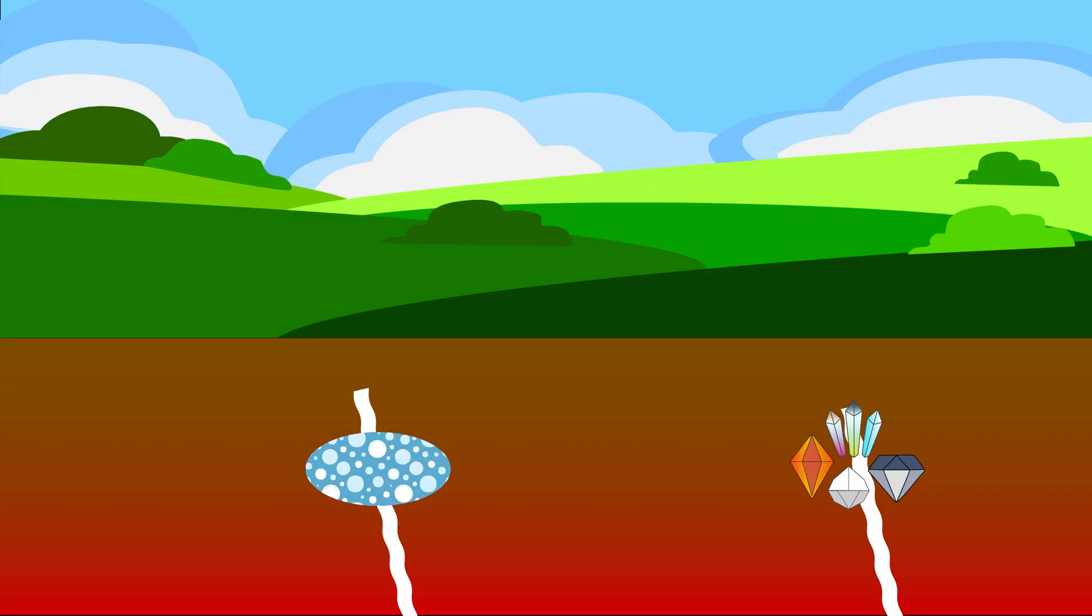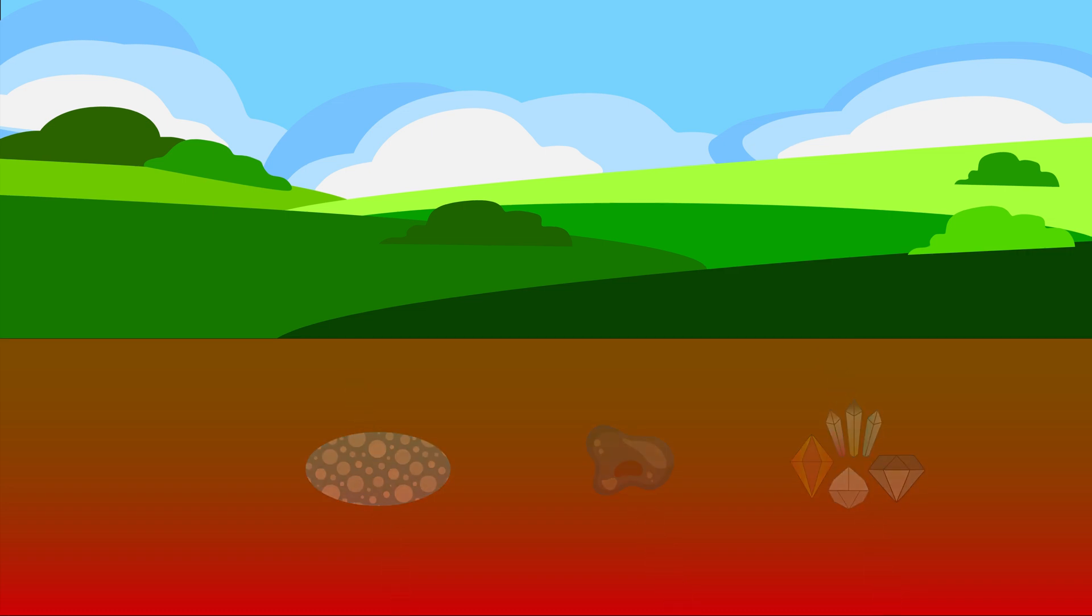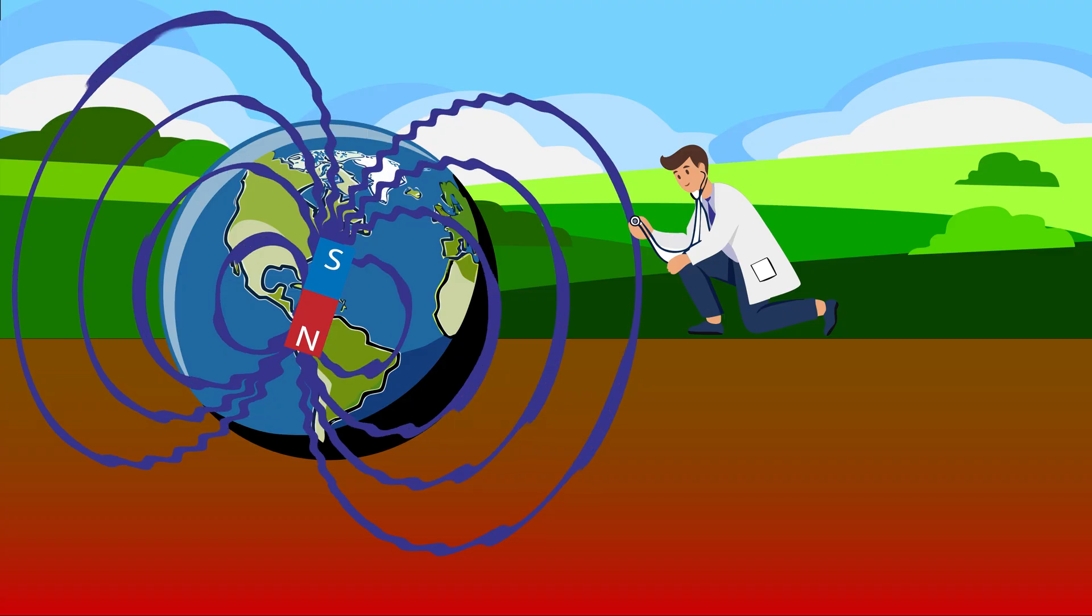Metal-rich rocks, like critical minerals, or hot water, like in geothermal hot spots, let the signal flow easily. They're called conductive. Dry, solid, or dense rock blocks or slows them. They're resistive. By studying how these signals move, magnetotellurics help scientists see underground just by listening to the Earth's natural hum.